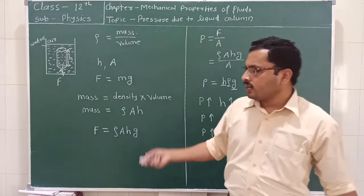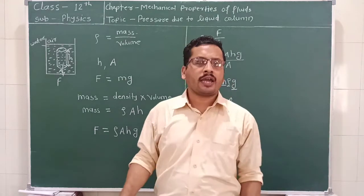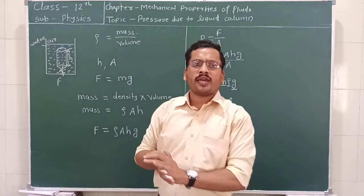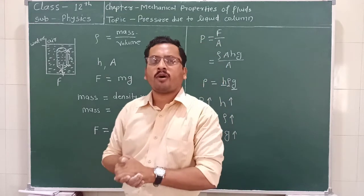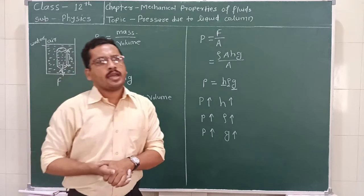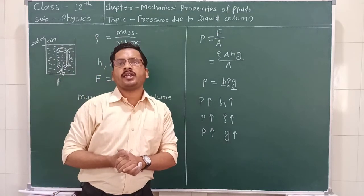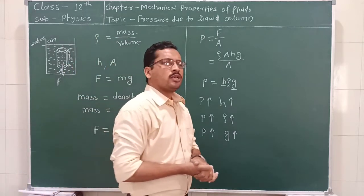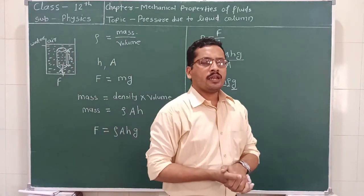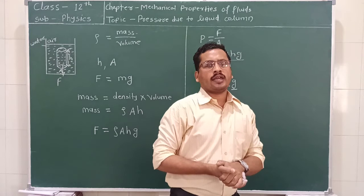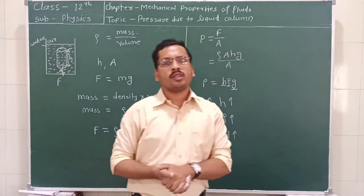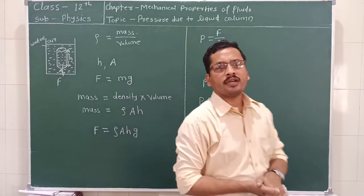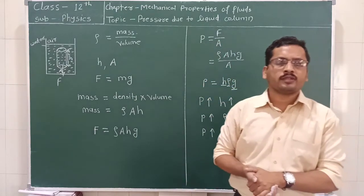The next topic in this section is atmospheric pressure. The atmosphere is made up of a very large number of air particles which contain oxygen, nitrogen, as well as some other particles. The weight of these particles exerts pressure on the earth's surface. Such type of pressure is called atmospheric pressure.